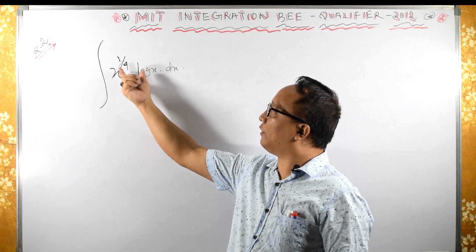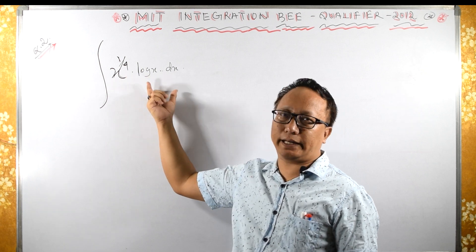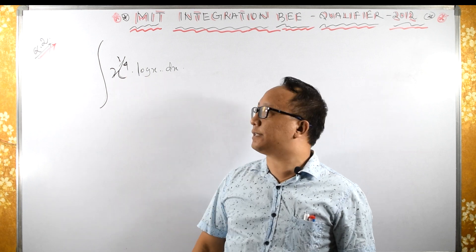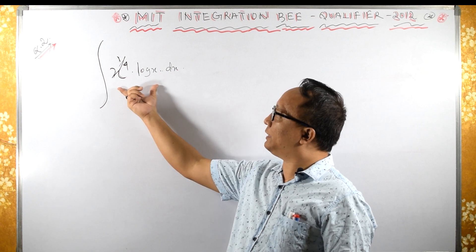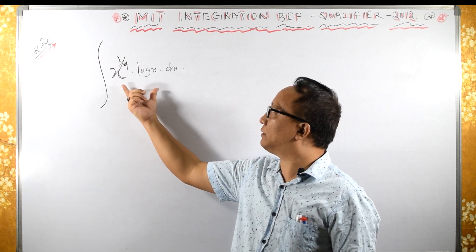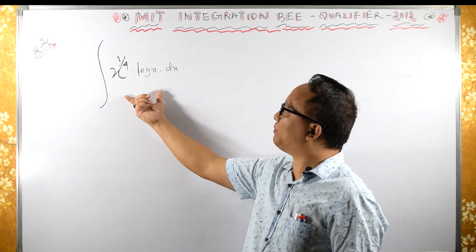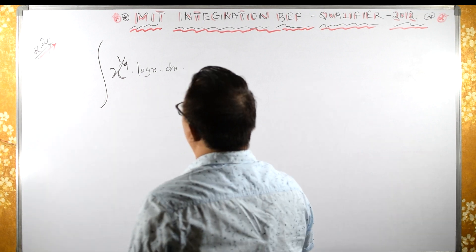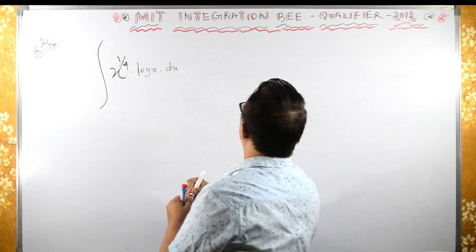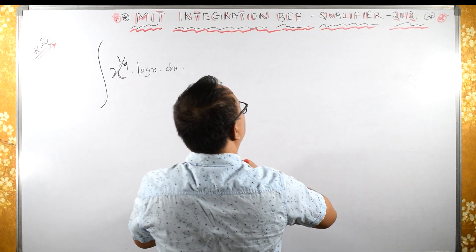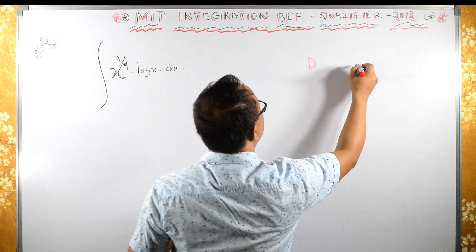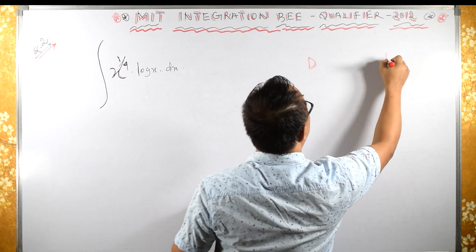We have the integral of x raised to 1/4 into log x dx. This can be solved two ways: first by applying integration by parts, and another by applying the DI method, also known as the tabular method. I will solve this using the DI method.